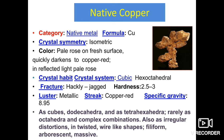If we talk about color, the basic color is pale rose on a fresh surface. It quickly darkens to copper red in reflected light. So on a fresh, unweathered surface the color will be pale rose, and quickly it darkens into copper red. This is the coloring phenomenon occurring in copper minerals.